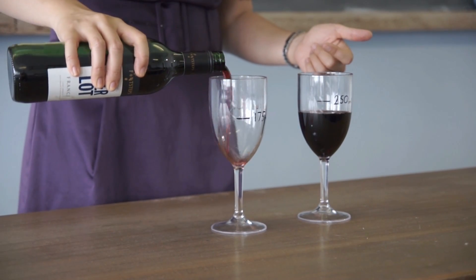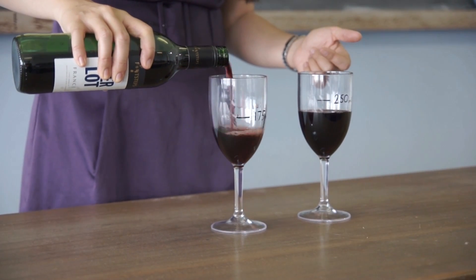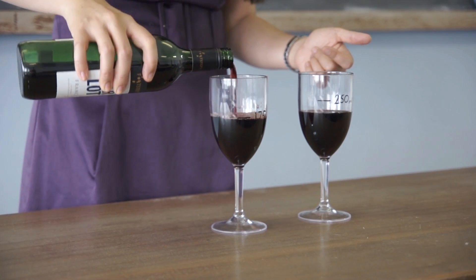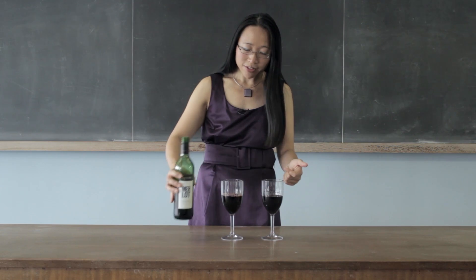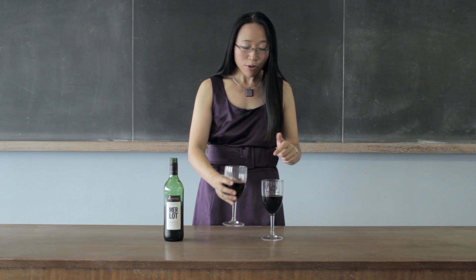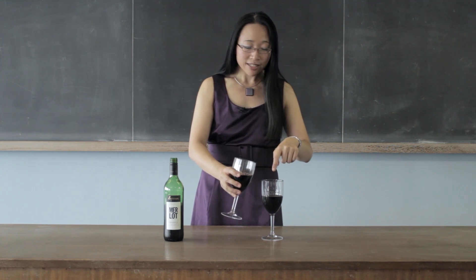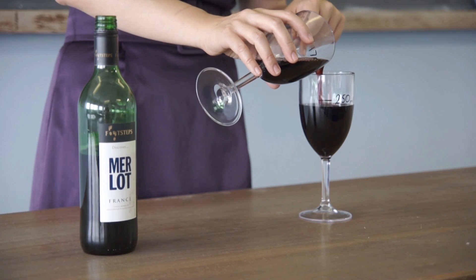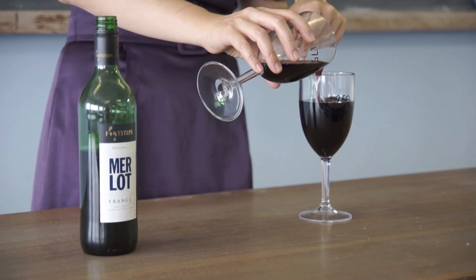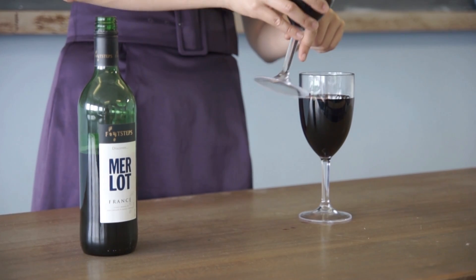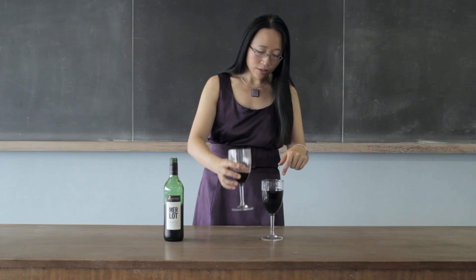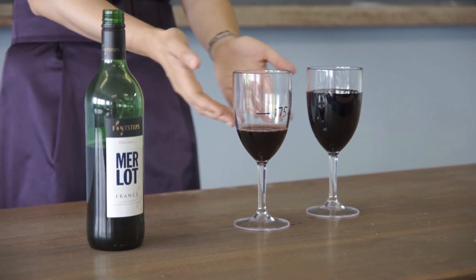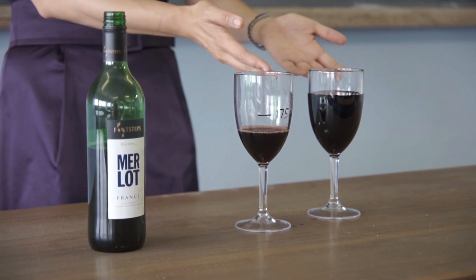Now, if I pour out another 175 milliliter glass of wine, all I have to do now is pour away 75 millilitres. So if I now top that one up to 250, what I'll have left here is 175 minus 75.